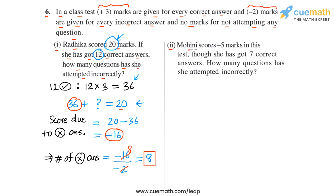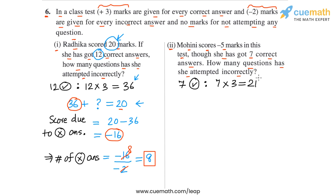Now let's do Part 2 similarly. Part 2 says Mohini scores minus 5 marks in this test, though she got 7 correct answers. How many questions has she attempted incorrectly? Mohini got 7 answers correct, and her total score is negative — it's minus 5 — so she must have answered many questions incorrectly.